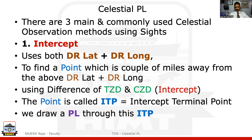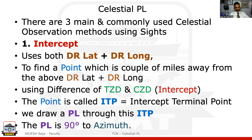Through this ITP, I am going to draw a position line — that is what is called your Celestial PL. This Celestial PL is always 90 degrees to the azimuth of the celestial body, which could be the Sun, Moon, or any star. So this is the basis of working of an intercept.